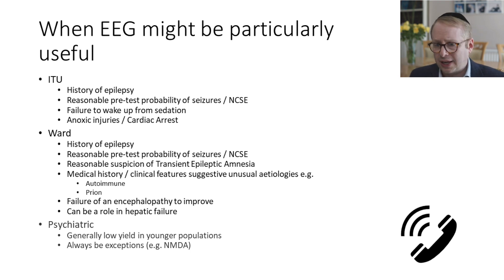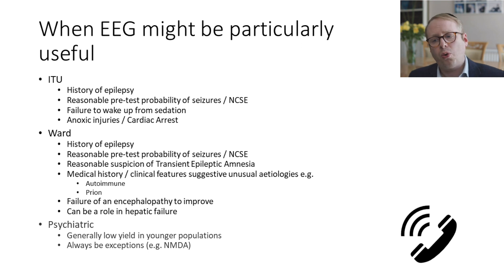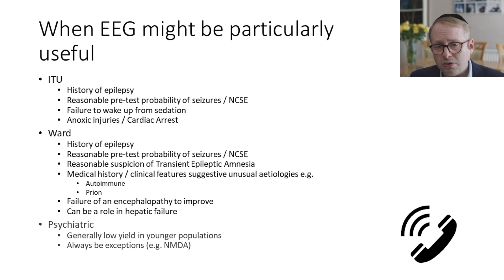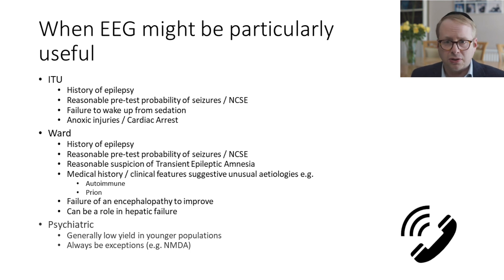In terms of ward patients, again, if there's a history of epilepsy or a reasonable pre-test probability of seizures or non-convulsive status, an EEG becomes more useful, as does suspicion of transient epileptic amnesia. Clinical features suggesting an unusual aetiology - such as autoimmune encephalopathy, encephalitis, or prion disease - might push you towards requesting an EEG. It can also be useful if there's failure for an encephalopathy to improve despite addressing all clinical biomarkers, and there can be a role in hepatic failure in certain settings too.